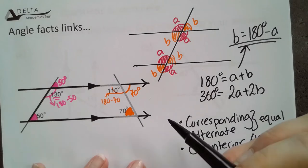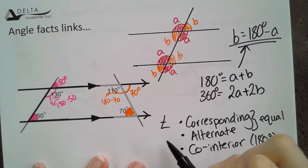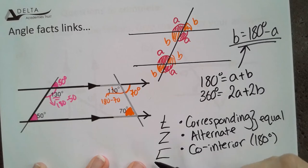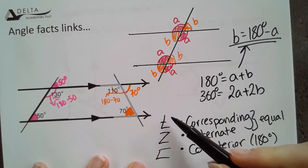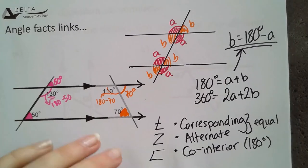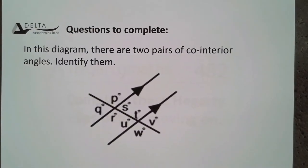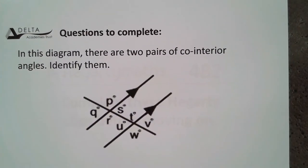So your corresponding is an F shape, alternate angles are in a Z shape, and your co-interiors are in a C shape. These are your shortcuts. Do not name them after them. We are looking for corresponding, alternate, and co-interior as our explanations.